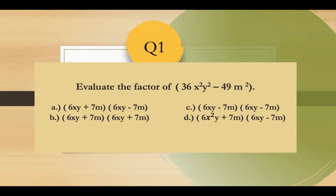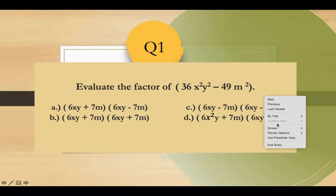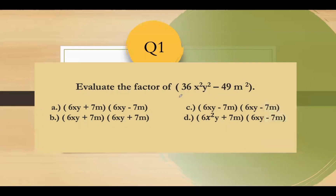Question number one: evaluate the factor of 36x squared minus 36x squared y squared minus 49m squared. So this is a perfect square — the difference of two squares. You are going to get the square root of the first term, which is 6xy, and then the square root of the second term, which is 7m.